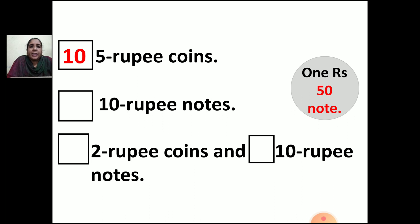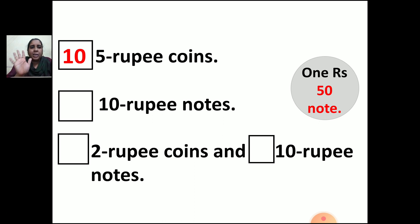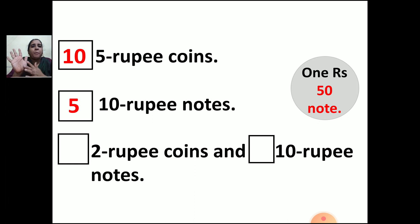Now second is 10 rupee notes. How many 10 rupee notes should you have to make 150 rupees? In the table of 10, when do you get 50? You know the table of 10 — 10 fives are 50. It means you should have 5 ten-rupee notes. So your answer will be 5 ten-rupee notes will make 150 rupees. 10, 20, 30, 40, 50 — you should have 5 ten-rupee notes to make 150 rupees.